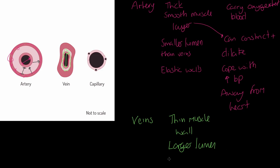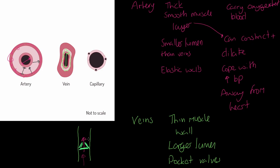Importantly, veins have pocket valves — they're not pictured in the image, so let me draw a vein here. The blood is moving in this direction, and this vein has a valve — almost like a trapdoor. During systole, when the heart is contracting, the blood pushes through the valve, which opens and allows blood to flow through. During diastole, this valve will effectively close, and blood cannot fall back in the wrong direction.